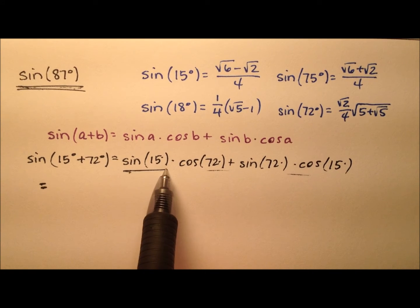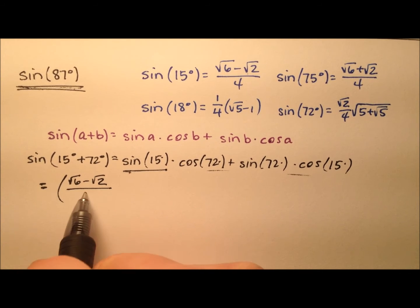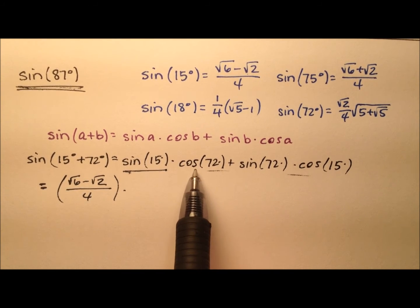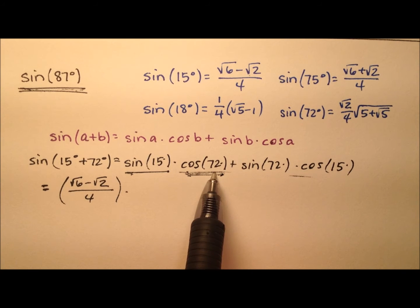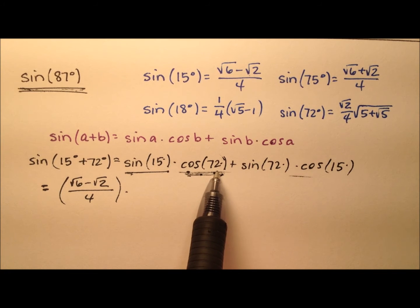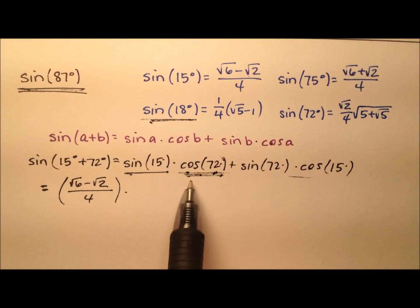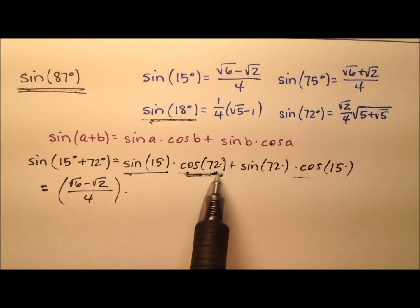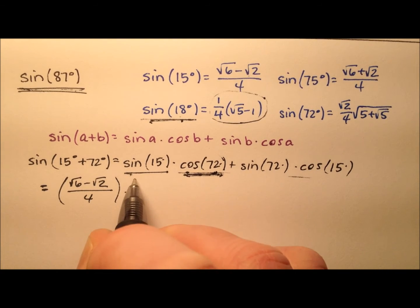The sine of 15 degrees is the square root of 6 minus the square root of 2, all over 4. We multiply that by the cosine of 72 degrees. Since sine and cosine are complementary, the cosine of 72 degrees equals the sine of 18 degrees, because 18 plus 72 equals 90 degrees. So we can plug in the exact value for the sine of 18 in place of the cosine of 72.